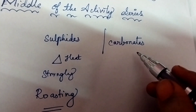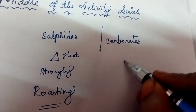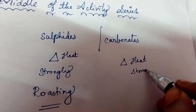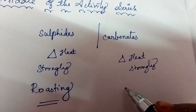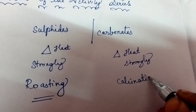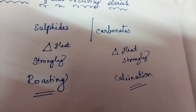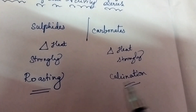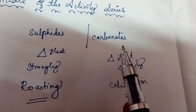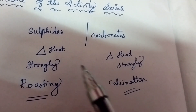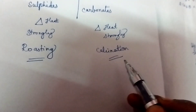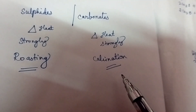Next is carbonates. I am heating the carbonates very strongly and that process is known as calcination. There are two different processes but the procedure is the same - strong heating. Here the main thing is sulfides for roasting, and here the main thing is carbonates for calcination. Heating both strongly gives us the metal.